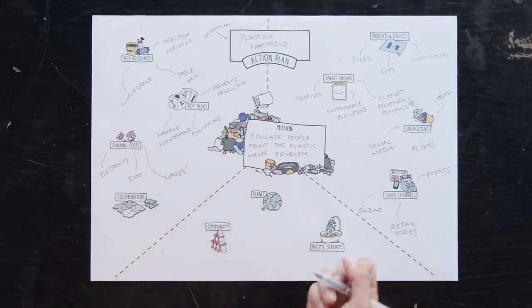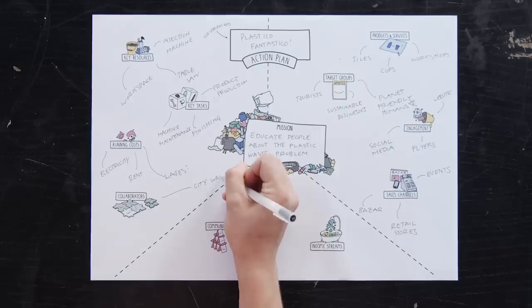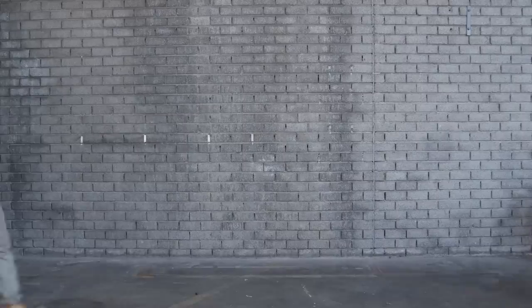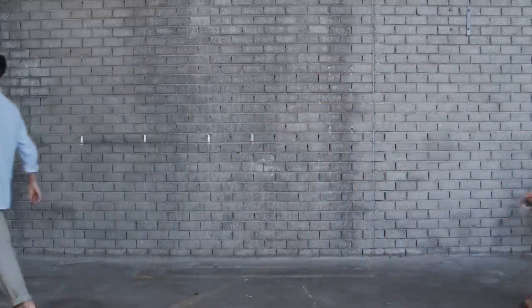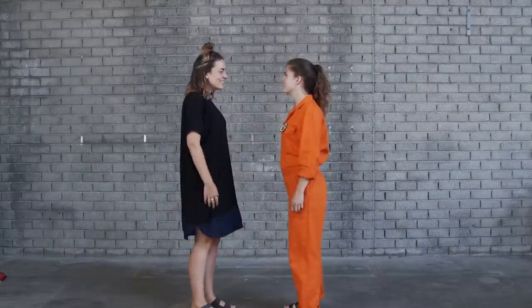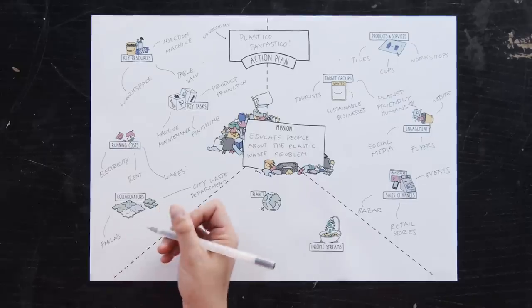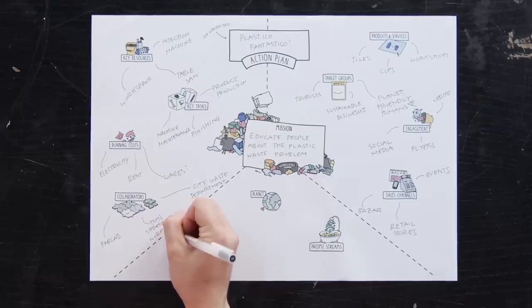The last section on the left side is our collaborators because successful businesses are not made alone. These are the key people, businesses, and other organizations outside of your workspace that will be crucial to your success. Lots of precious plastic businesses get help from a fab lab or business incubator to help them get started. But there could be other key suppliers, community leaders, or government agencies that could be critical to your success. That could be because of the financial support they offer you or simply being a champion for your business and spreading the word.